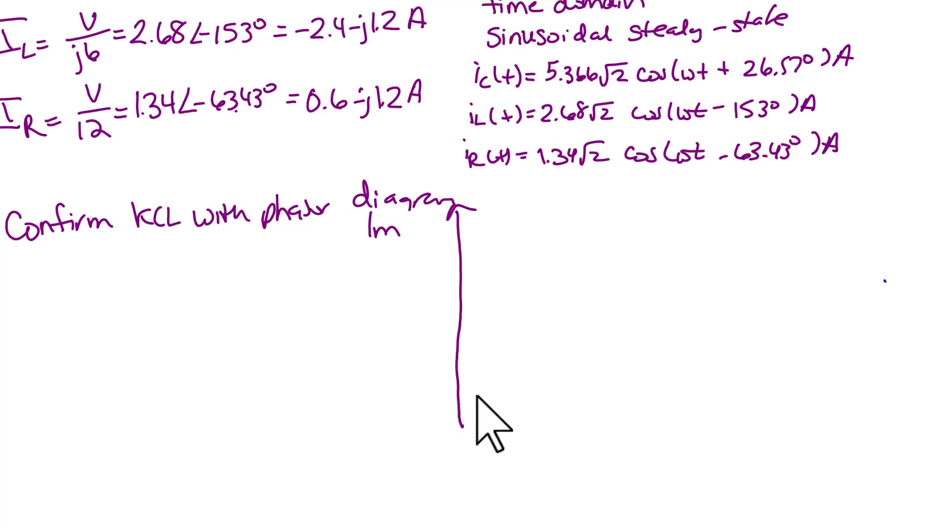So next, we will use a phasor diagram to confirm KCL for our circuit analysis. So we are going to show that IC plus IL plus IR adds up to our source current.